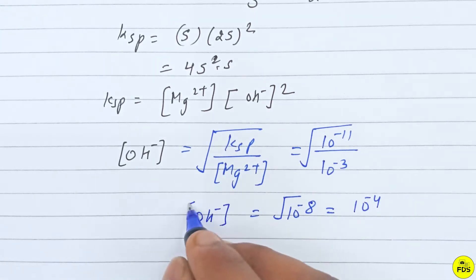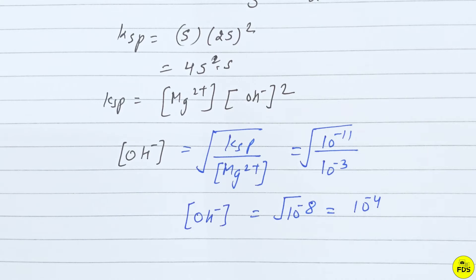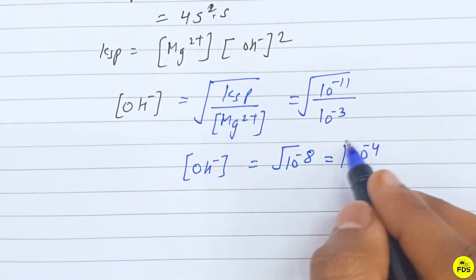OH- is equal to the negative concentration, 10 raised to power minus 4 value.